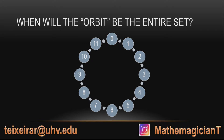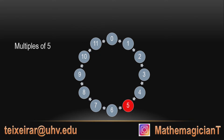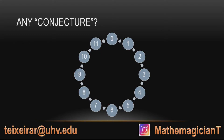We call this the orbit of an element. So what are the multiples of 5? 5 plus 5 is 10, plus 5 again is 15, modulus 12 is 3, then 8. And you see that it's very similar to what Raymond talked about yesterday — you go all over the numbers before you go back to 0.